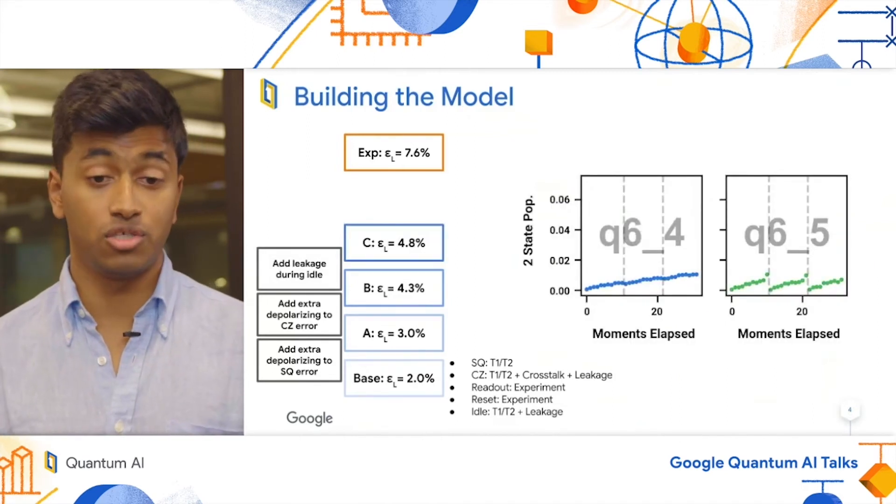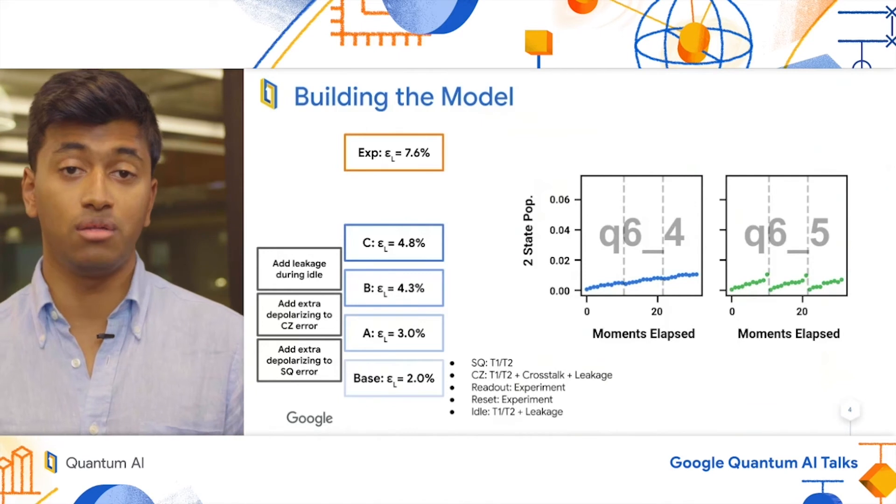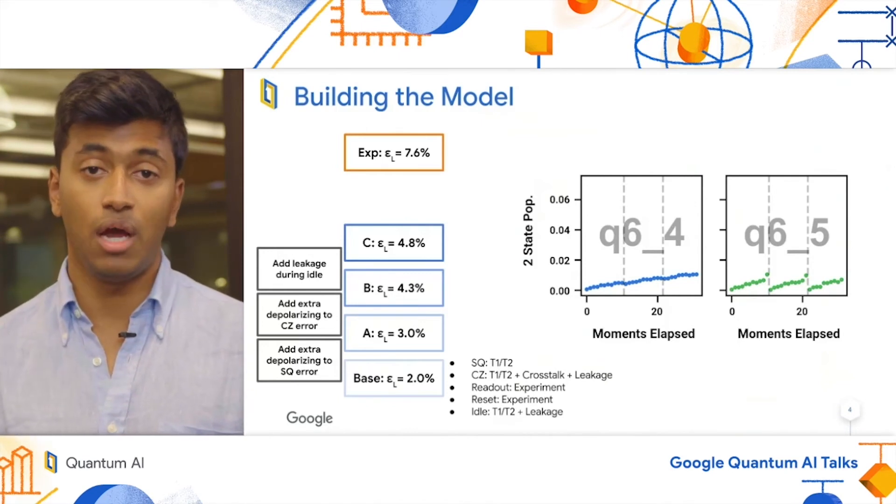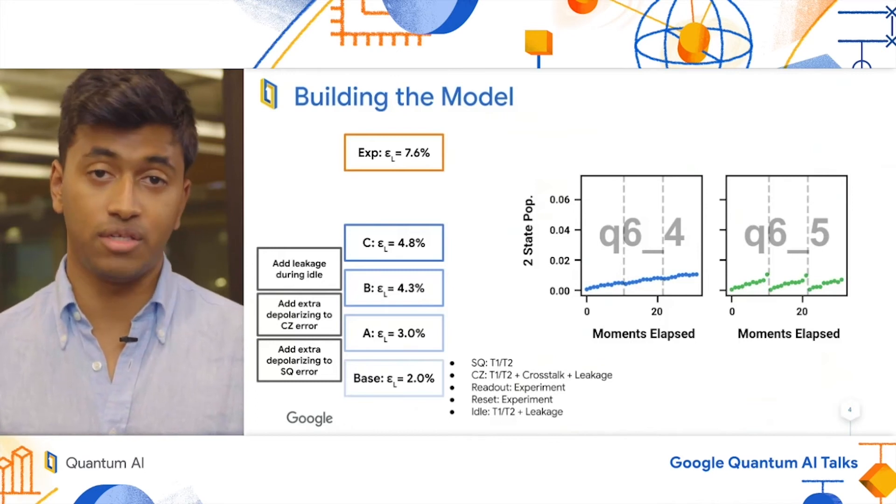Next, we look at the leakage rates. To do this, we look at an experiment we call leakage slicing, which involves essentially running our error correction experiment up to a certain depth, cutting it off, and then measuring this higher excited two state.